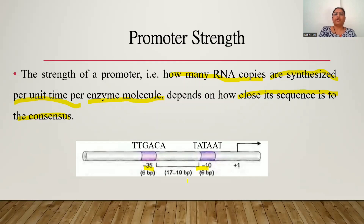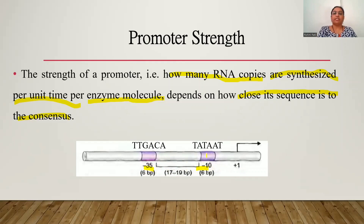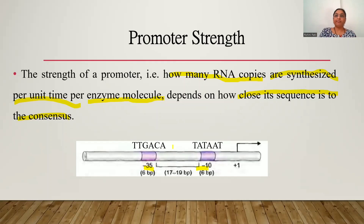The minus 10 region has a consensus sequence of T-A-T-A-A-T, and the minus 35 consensus sequence is T-T-G-A-C-A. These are the consensus sequences. When a promoter has these consensus sequences, RNA polymerase is efficient in loading over the promoter, because these consensus sequences work like an address for the RNA polymerase.